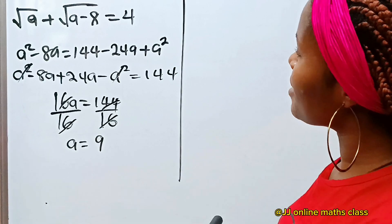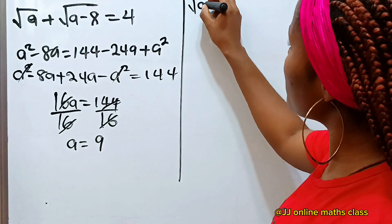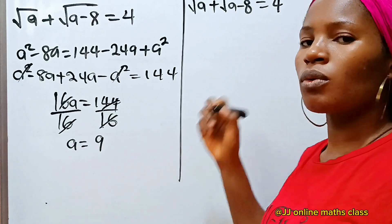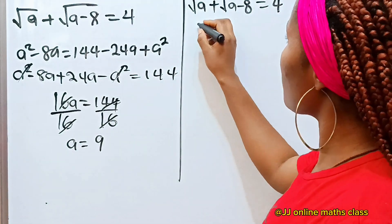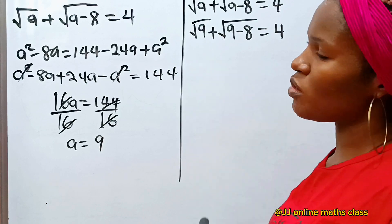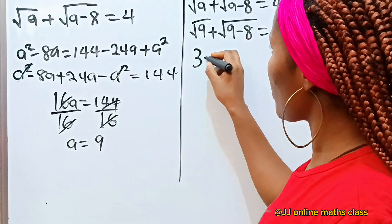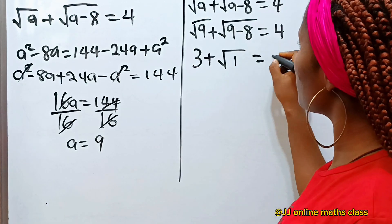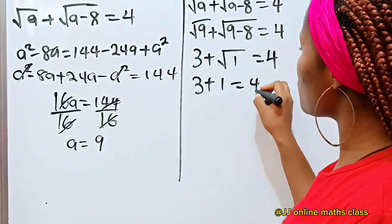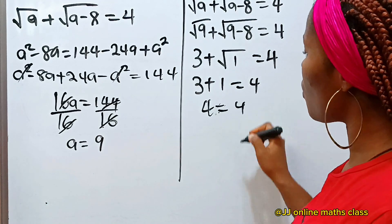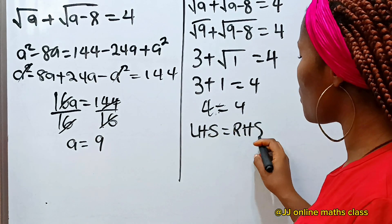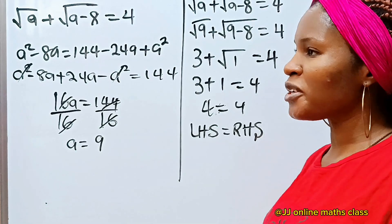Now let's prove that the answer is correct — this is the most interesting part. The original equation is: square root of a plus square root of a minus 8 equals 4. Substituting a equals 9: square root of 9 plus square root of 9 minus 8 equals 4. That gives us 3 plus square root of 1, which is 3 plus 1 equals 4. The left-hand side equals the right-hand side, confirming that a equals 9 is correct. Thank you so much for watching.